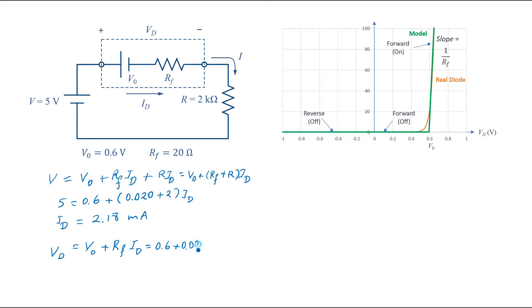And if we put the numerical values, we can find the voltage across the diode equal to 0.64 volts.